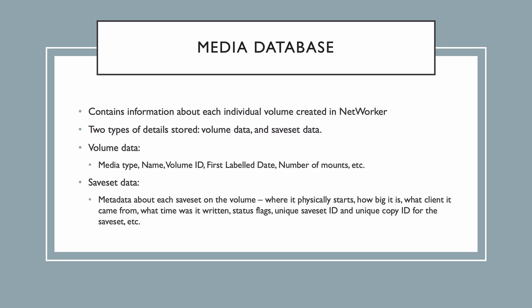When networker does backups, it writes save sets to a volume, so the other part of each volume's entry in the media database is information about the save set stored on the volume. This includes details like the time the save set was generated, when the save set finished writing, the name of the save set, the name of the client, some status flags, and the unique save set identifier, or ID, and the unique copy ID for that particular save set.